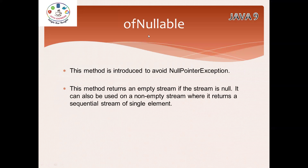Another method is ofNullable, introduced to avoid NullPointerException. From Java 9 onwards, inside a stream, if you have a null value, the ofNullable method returns an empty stream. It can also be used for non-empty streams. Previously you would get a NullPointerException; from now onwards there is no NullPointerException - you will get an empty stream instead.